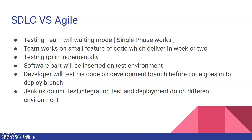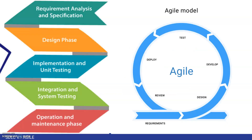SDLC works in a single sequential flow: it starts with requirement analysis and specification, then moves to the design phase, then implementation, followed by unit testing and system testing, and finally the product gets released and enters maintenance mode. Each phase completes before the next one starts. This is the simple waterfall model that has been working for a long time and many products have been released using it.